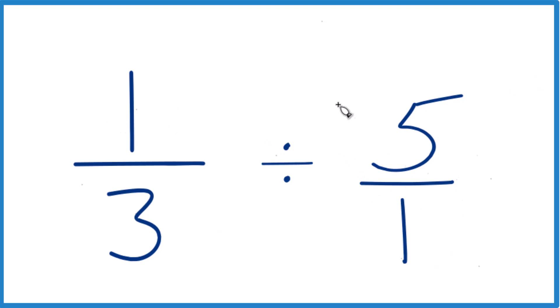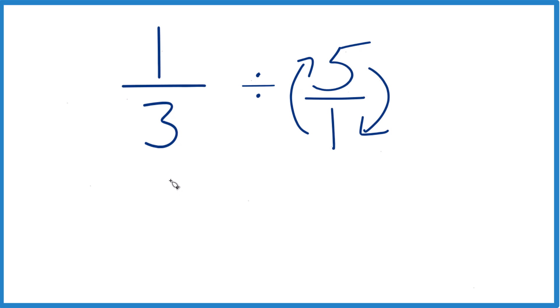Next, I'm going to take the reciprocal of 5 over 1. So I move the denominator to the top, the numerator to the bottom. That's how you get the reciprocal. That way, I have my 1/3, and instead of division, I can multiply by the reciprocal.